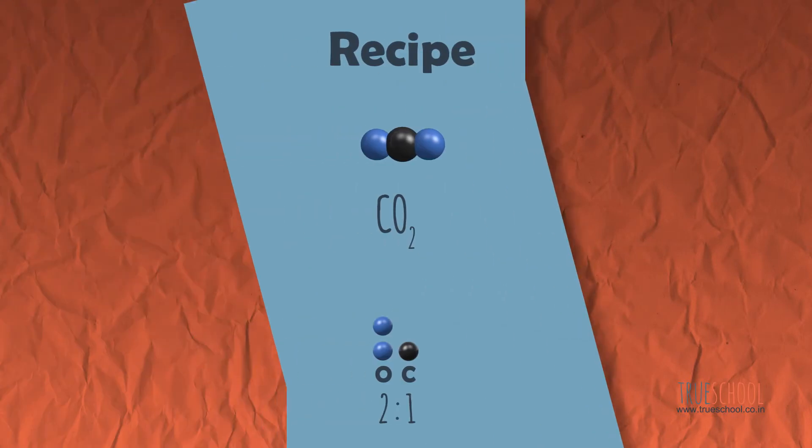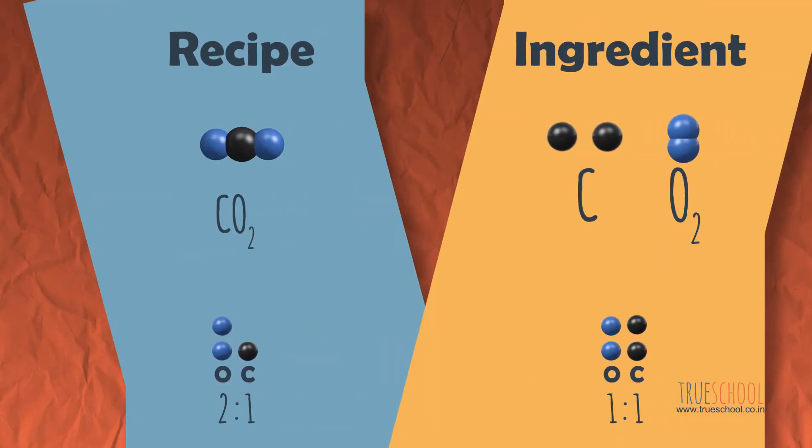You have two carbon atoms and one O2 molecule. Carbon and oxygen react to form carbon dioxide. CO2 has carbon and oxygen in a one-to-two proportion. What will happen if we let it react to form CO2? Isn't our ingredient missing one more molecule of oxygen?